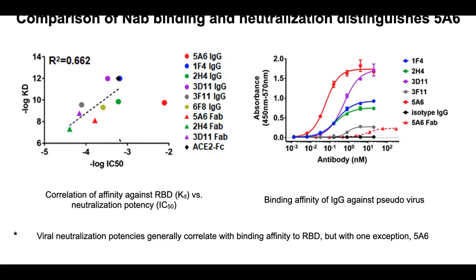Another way to show this clearly: plotting the log of binding affinity against the ability to block pseudovirus, there is a pretty linear correlation between affinity and potency — except for 5A6, which really stands out. It is quite different from the rest. And looking at the Fab data, you can see how clearly 3D11's ternary structure is going to turn out to be important.